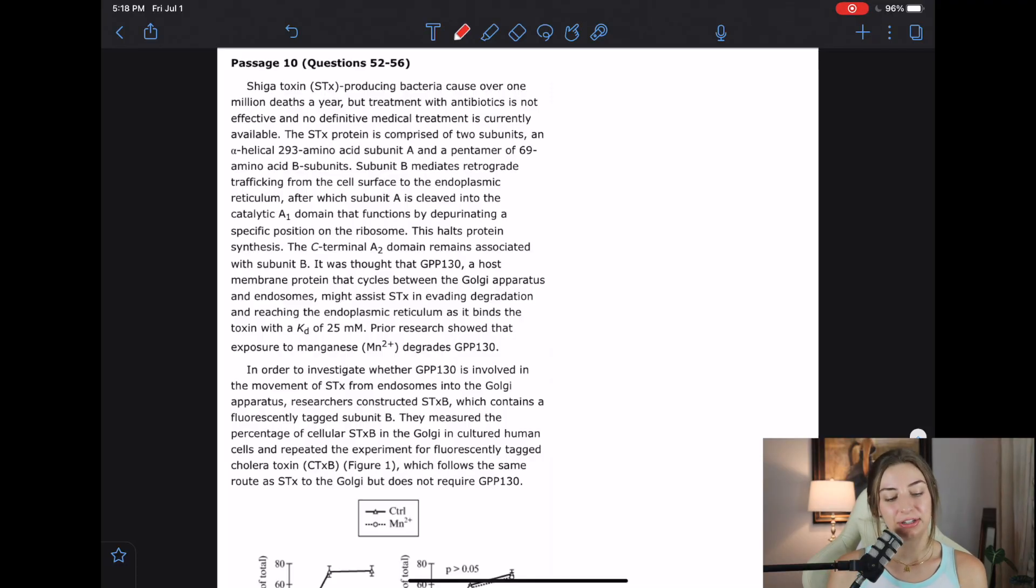The passage starts out. The Shiga toxin protein is composed of two subunits, an alpha helical 293 amino acid subunit A, and a pentamer of 69 amino acid B subunits. Okay, so here we got some basic sciences. We got subunits, quaternary structure.